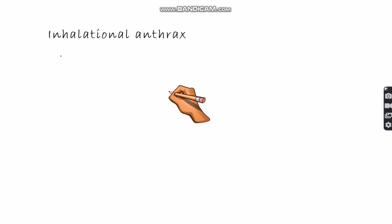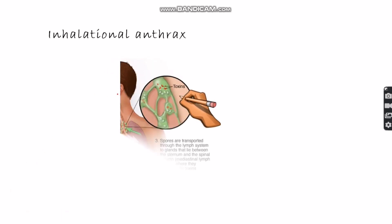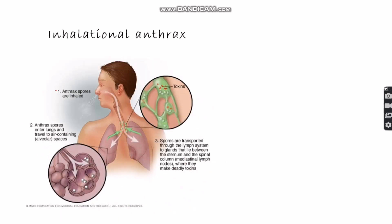In inhalational anthrax, the person inhales anthrax spores. These spores enter the lungs, travel through the air spaces — the alveoli — and are transported through the lymph system to glands lying between the sternum and the spinal column, where they produce deadly toxins.